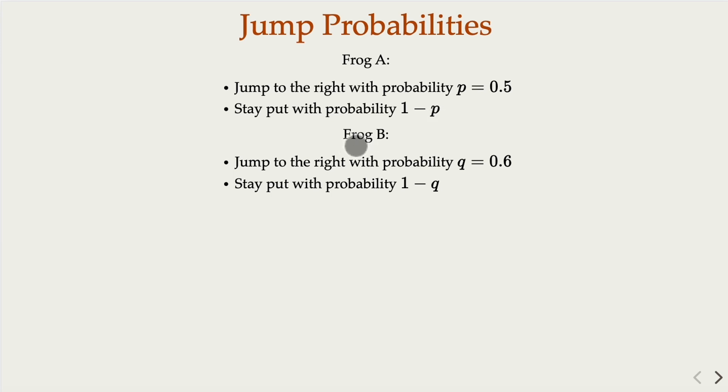For the second frog, it will jump to the right with a different probability, 0.6, and will stay put in the same position for 1 minus q, which is 0.4.